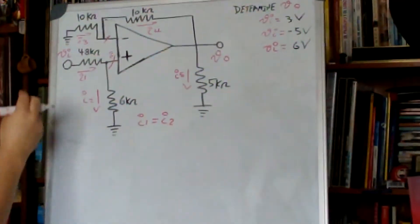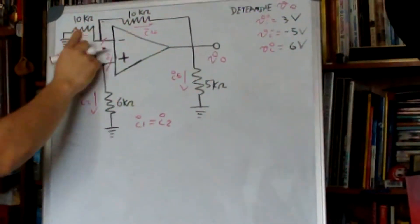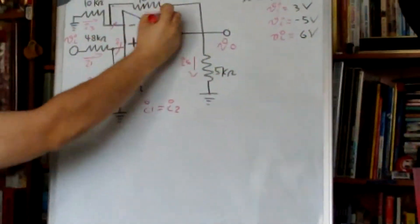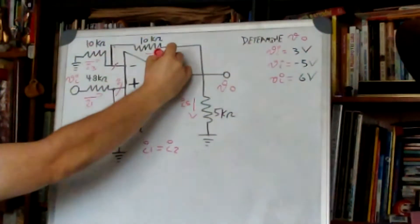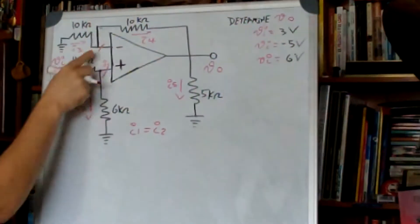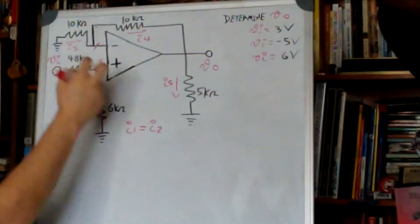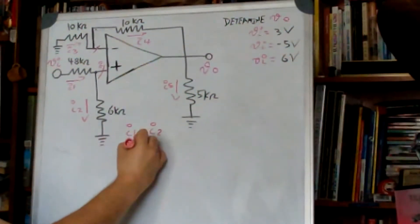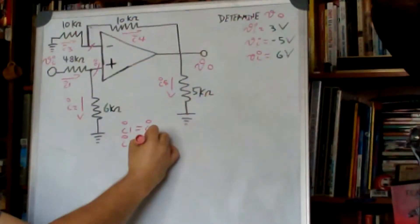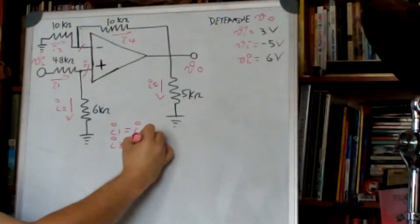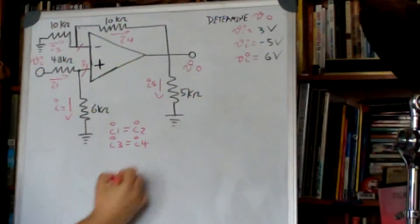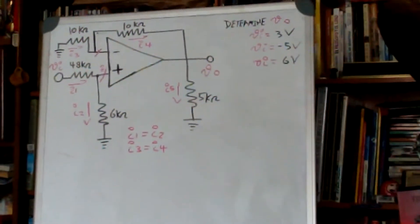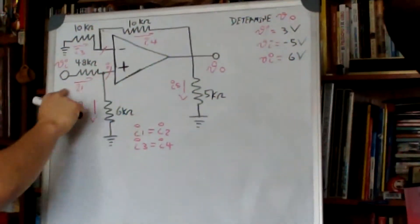This also means that i3 is equal to i4 because there is only one path and there is no current inside, so i3 is equal to i4.